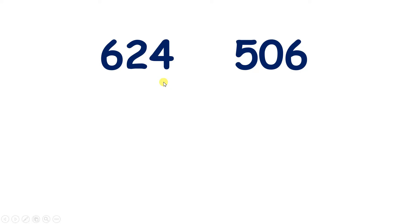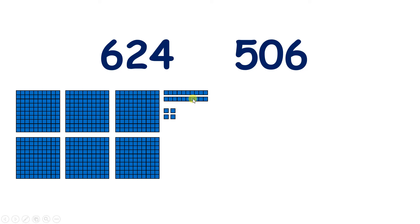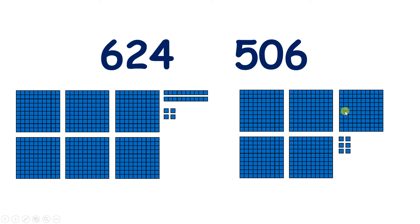Now we have 624, so six hundreds, two tens and four units, and 506, so five hundreds, no tens and six units. Which number is larger? Well, 624 is greater than 506, because if you're comparing two three-digit numbers, the number which has the most hundreds will always be the larger number.